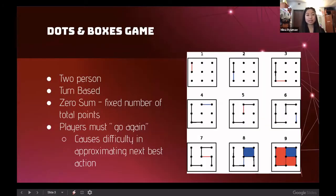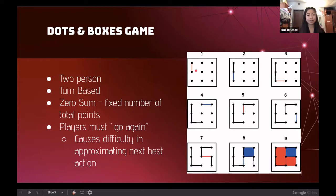Going into the Dots and Boxes game, this is what a small board looks like — it's filled with dots and two players take turns placing edges until the entire board is filled. Dots and Boxes is a zero-sum game, meaning there are a fixed number of total points. The way to score a point is to place the fourth edge in a box; for a two by two board, there are four total points that can be scored.